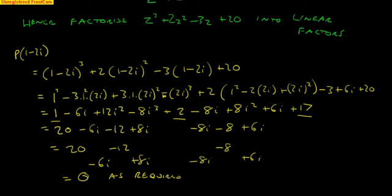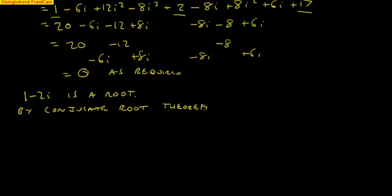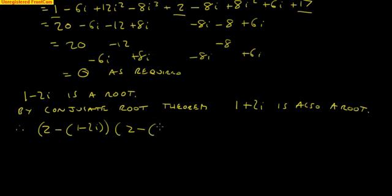OK. We've got that 1 minus 2i is a root of it. We're given that. Now, I have a conjugate root theorem. 1 plus 2i is also a root. Therefore, z minus (1 minus 2i) and z minus (1 plus 2i) are factors.